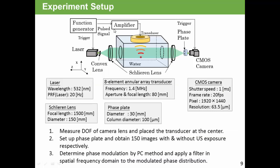This experiment setup is shown in this figure. First measurement setup is to measure depth of field of camera lens and place the transducer at the center. Second, we set up phase plate and obtain 150 images with and without ultrasound exposures respectively. Finally, we determined phase modulation by PC method and applied a filter in spatial frequency domain to the modulated phase distribution.